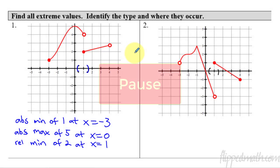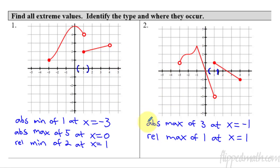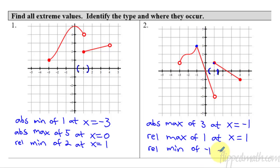Pause the video and try this next one on your own. So here I have two answers: an absolute max of 3 at x equals negative 1—that's the highest point. Then there's a relative max of 1 at x equals 1, because if you construct an interval, that point is higher than those on both sides. You could possibly also call the endpoint a relative minimum of negative 1 at x equals 4, but since there's nothing on the right, it's tricky. Ask your teacher. Don't stress about endpoint ones—unless it's an absolute min or max, those you must label.